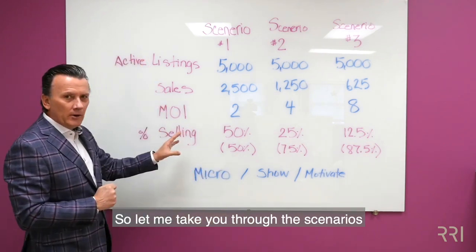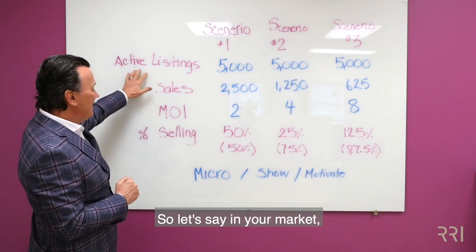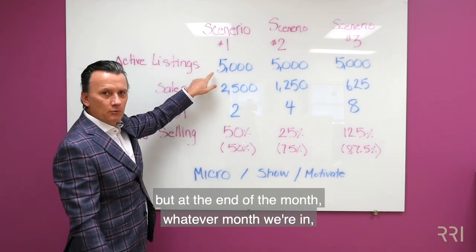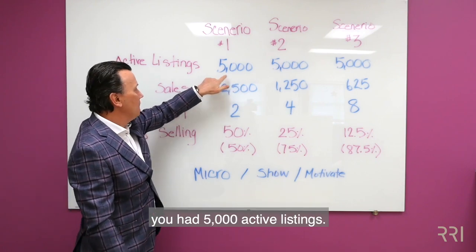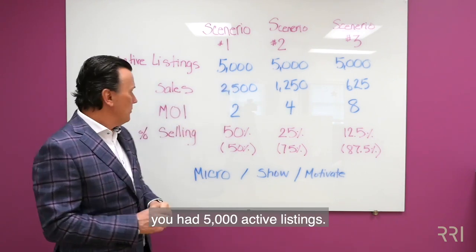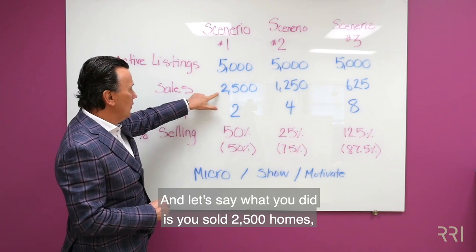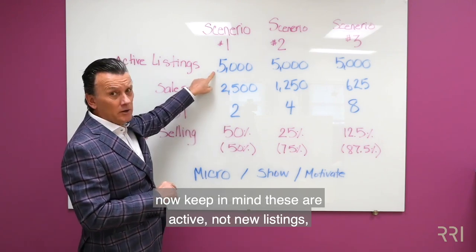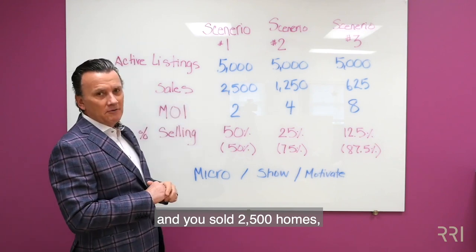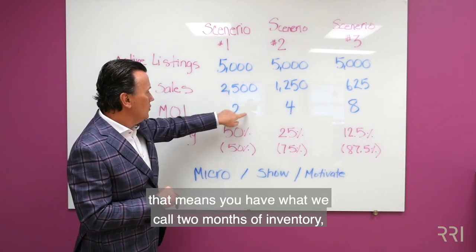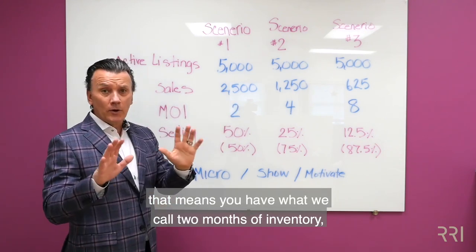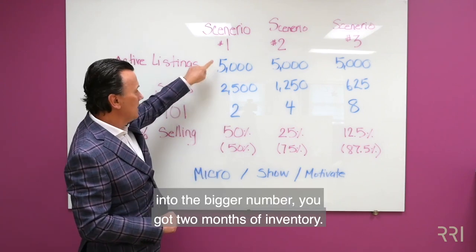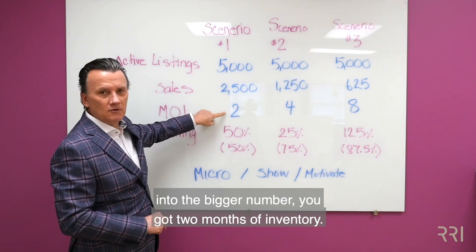Let me take you through the scenarios to help you understand this. Let's say in your market — and all the numbers are going to be different — but at the end of the month, you had 5,000 active listings. And let's say you sold 2,500 homes. Keep in mind, these are active, not new listings. You sold 2,500 homes, that means you have what we call two months of inventory. Very easy number to figure out — all you do is divide the smaller number into the bigger number.